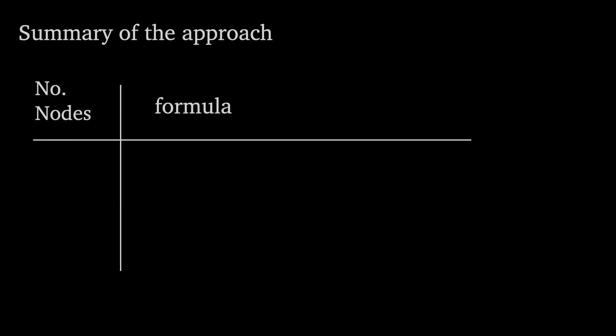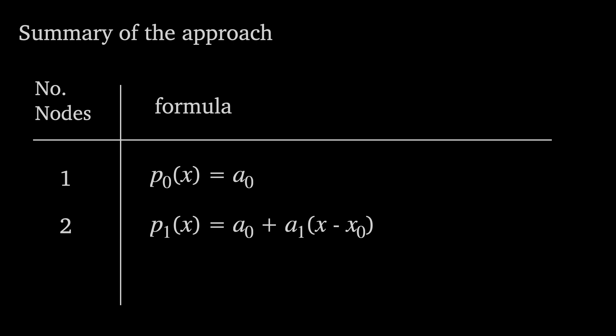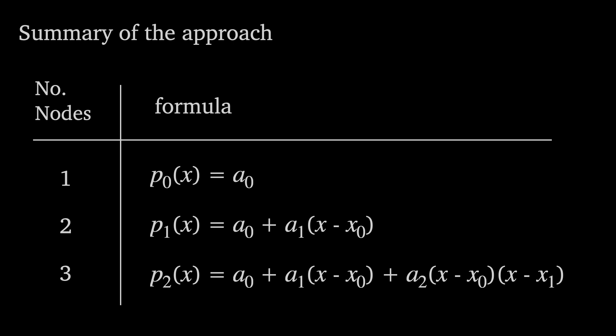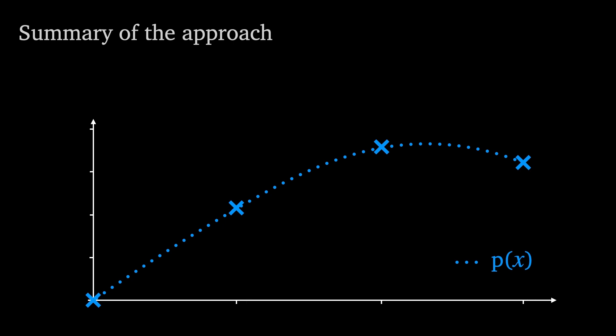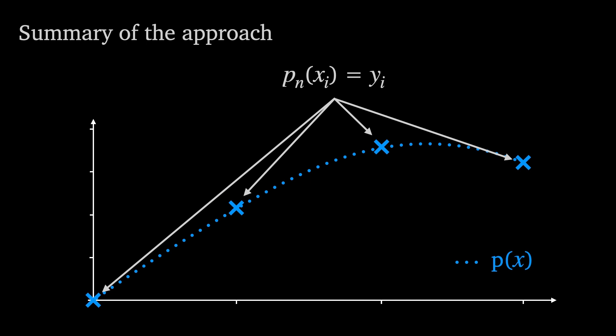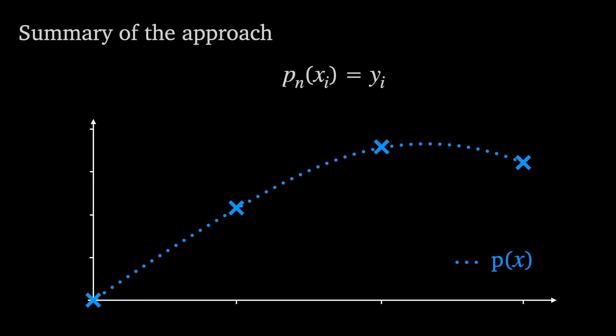There are two basic facts to mention before jumping into the formula. The first is that the number of nodes determines the order of the polynomial. For one node we have a 0th order polynomial, for two nodes a first order polynomial or straight line, and for three nodes a quadratic. In general, for n plus 1 nodes we get an nth degree polynomial. The second rule is that by definition the interpolating polynomial must agree with the y values at the nodes — that is, p of x sub i must equal y sub i for every node x sub i.